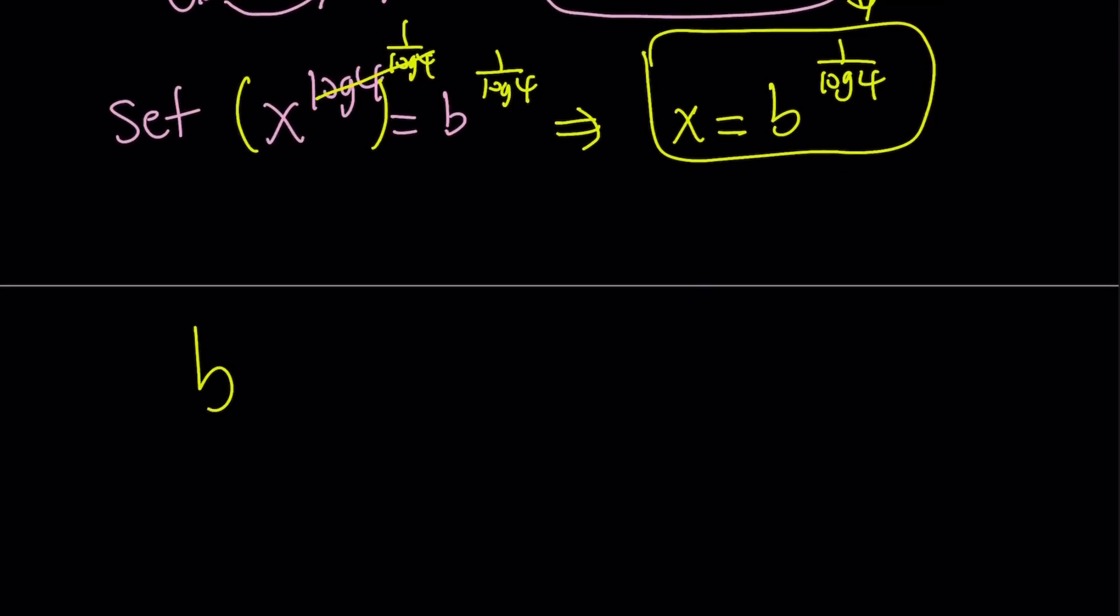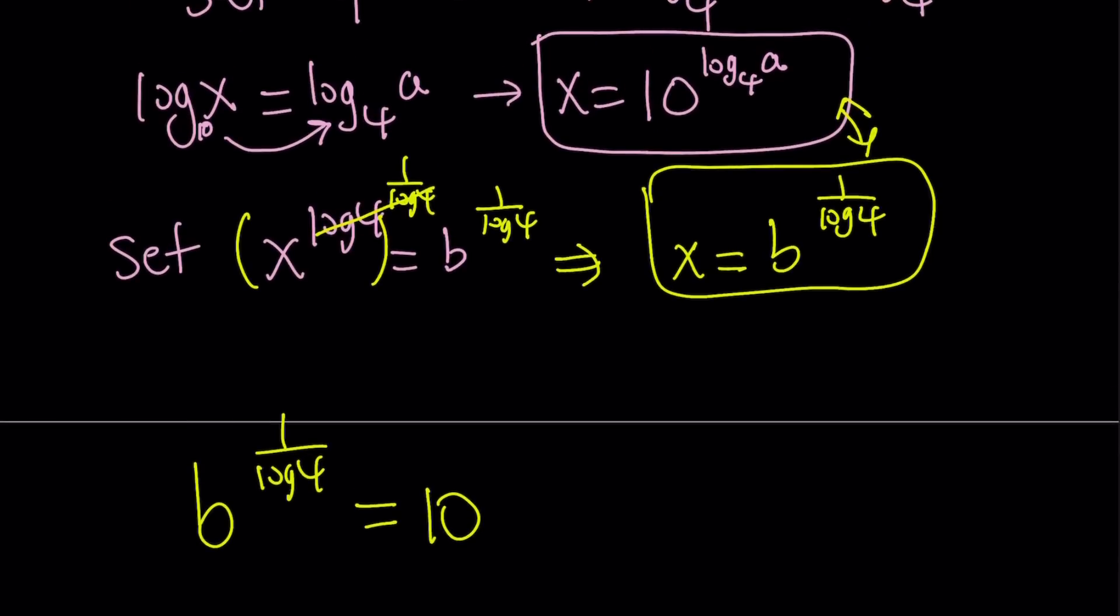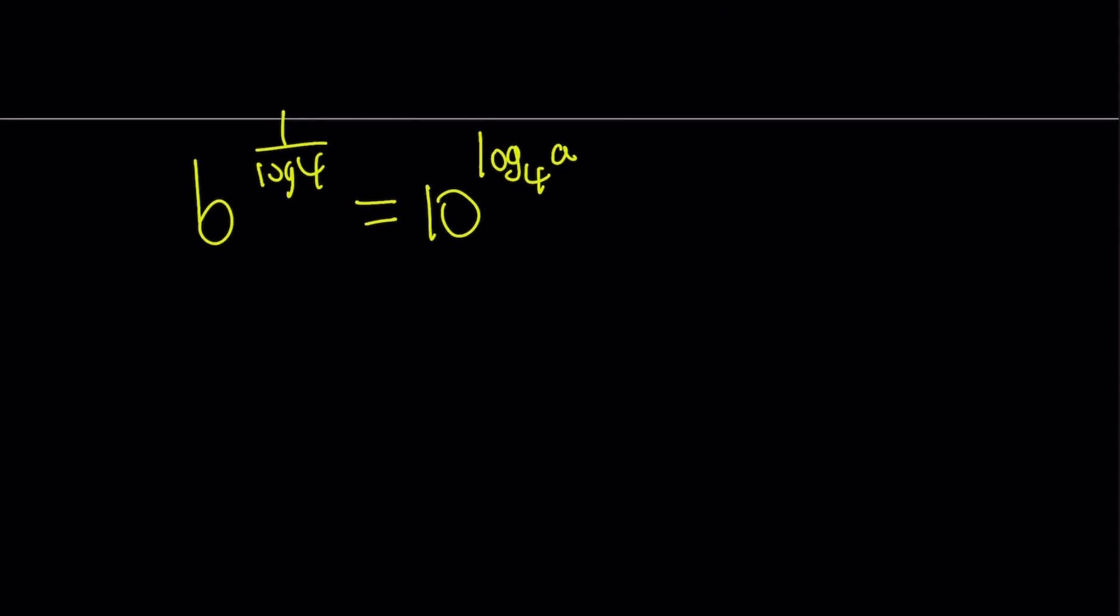Let's write b to the power 1 over log 4 equal to 10 to the power, which is the other x value, log a base 4. Alright? So how does this help? This kind of looks confusing, doesn't it? So here's what I'm going to use. I'm going to use the change of base on this one. How does change of base work? Change of base works like this. If you have log m base n, you can write it as log m over log n. Here I use base 10, but you can use any base you want. That's change of base.